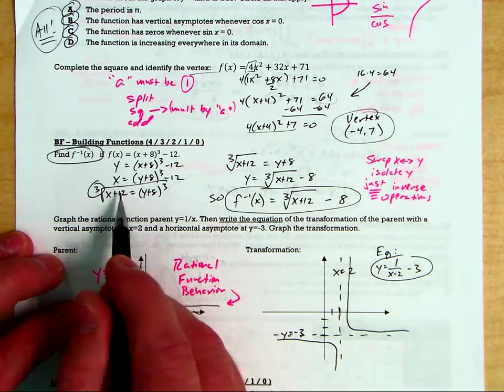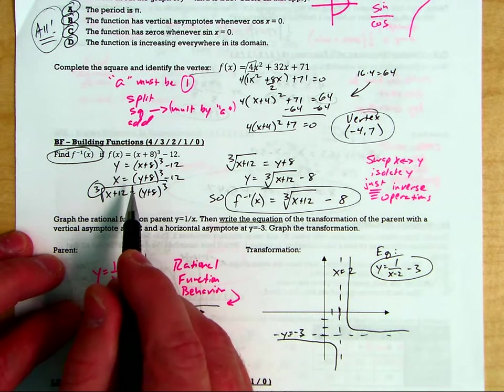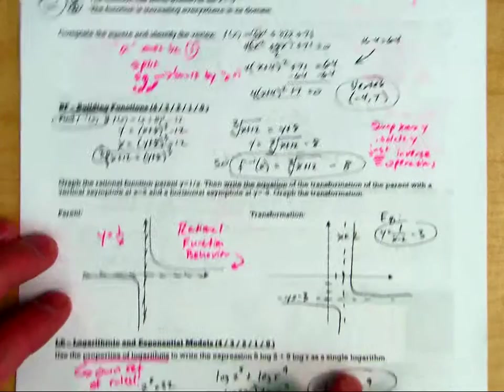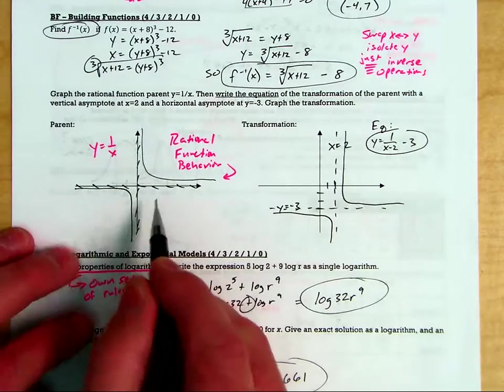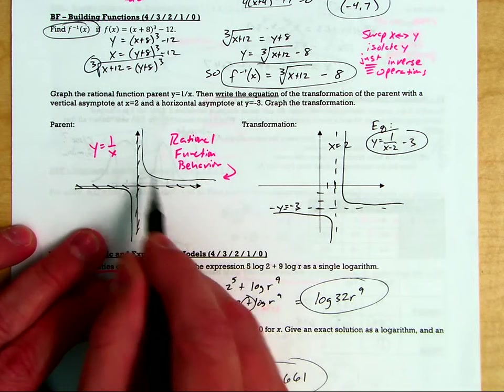you just swap x and y and then isolate y with inverse operations. That's it. This is not a hard skill. It's just you guys aren't looking at this and remembering what to do. Same thing with this one. This is what a rational function looks like. This is what a rational function does. It makes these l branches.